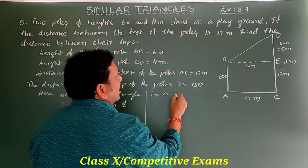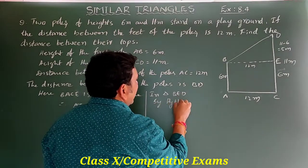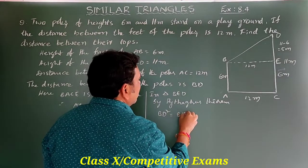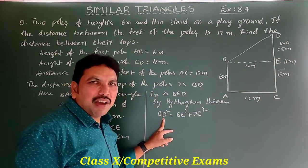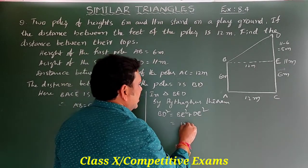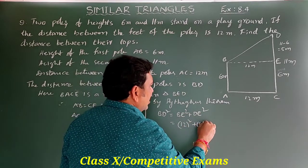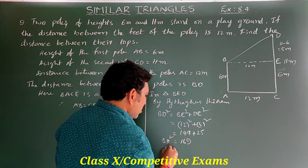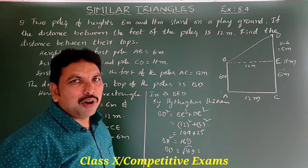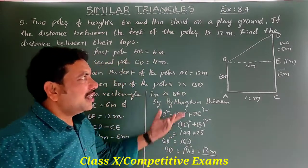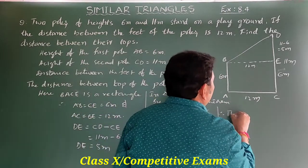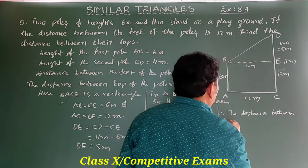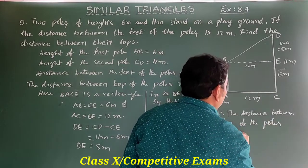So BD = √169 = 13 meters. Therefore the distance between the tops of the poles is 13 meters.